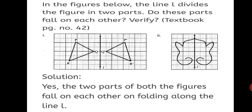So you see a triangle PQR on left of the line L and similar triangle P'Q'R' (or P prime, Q prime, R prime) on the right side of the line L. So your solution is yes, the two parts of the first figure fall on each other on folding along the line L.